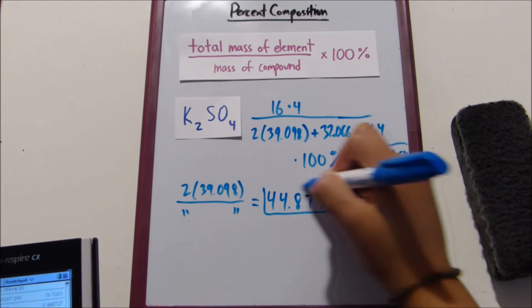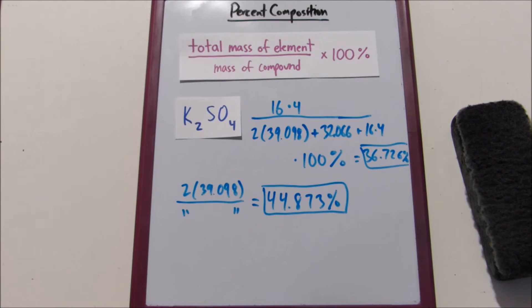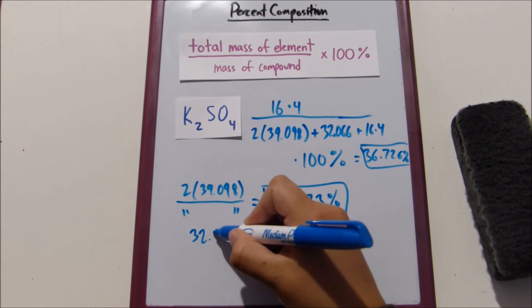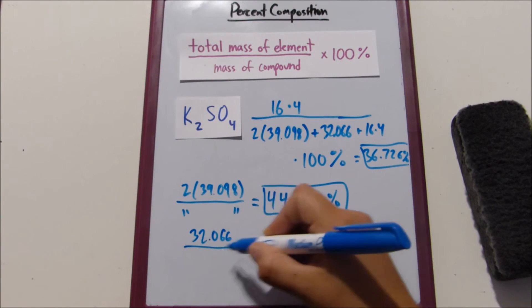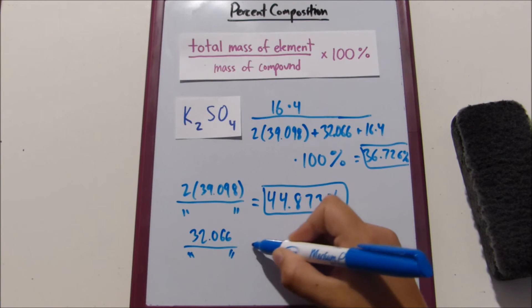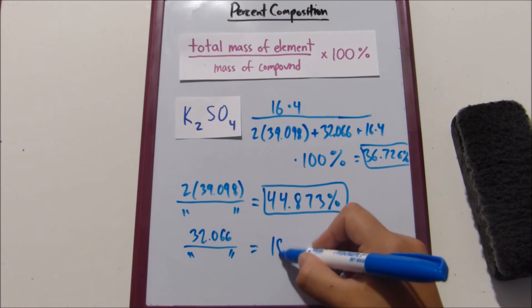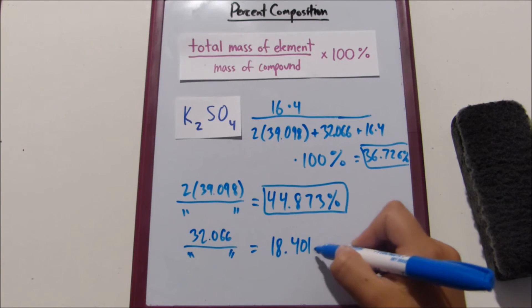And I've rounded here, so it might make up more than 100%, but it's definitely going to be close to 100%. And then for the sulfur, 32.066 over the denominator, and that is going to be 18.401%.